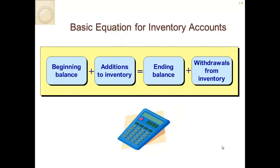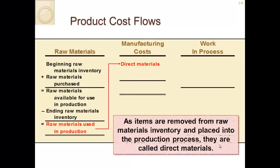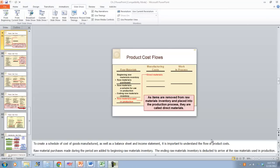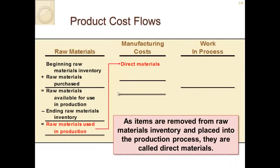The basic equation for inventory is: beginning balance plus additions equals ending balance plus withdrawals, where withdrawals are a negative number. For product and cost flow, you start with beginning raw material inventory and add all raw materials purchased, giving you raw materials available for use. You then subtract ending raw materials inventory to get raw materials used in production. These items are removed from raw materials and placed into the production process, where they are called direct materials.